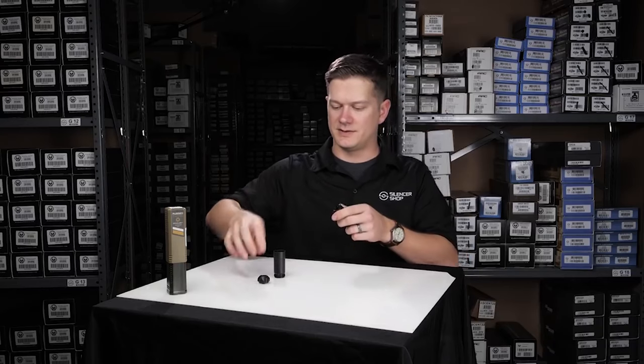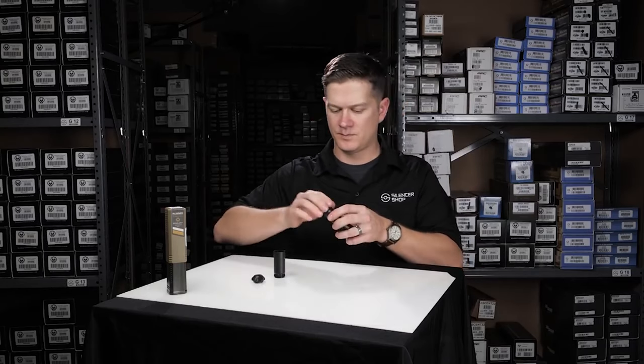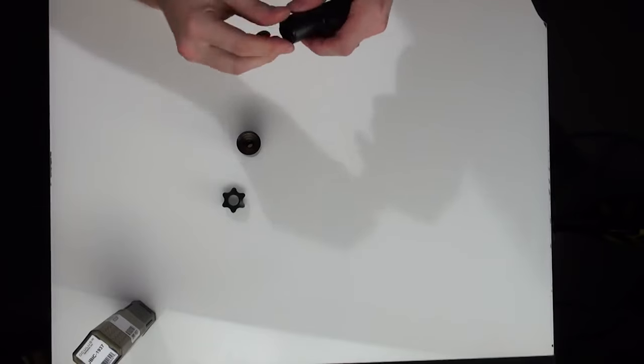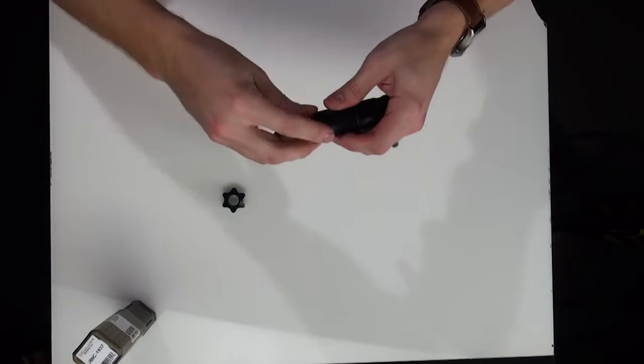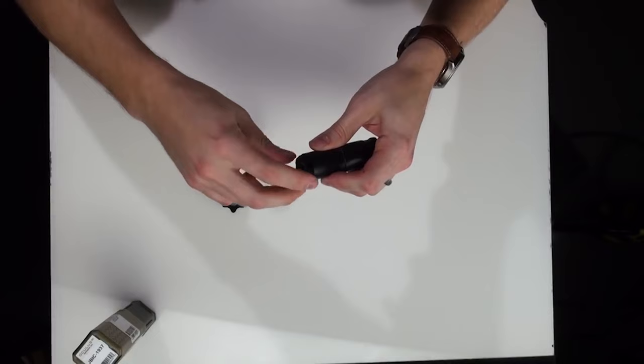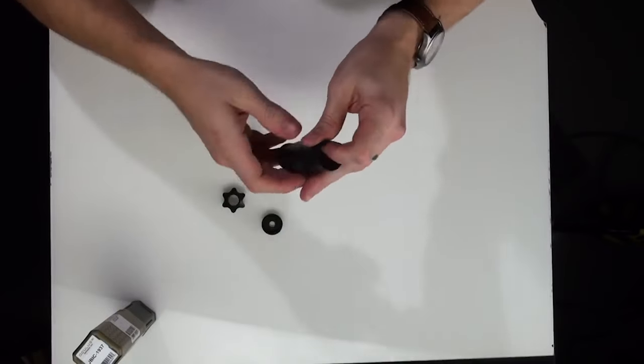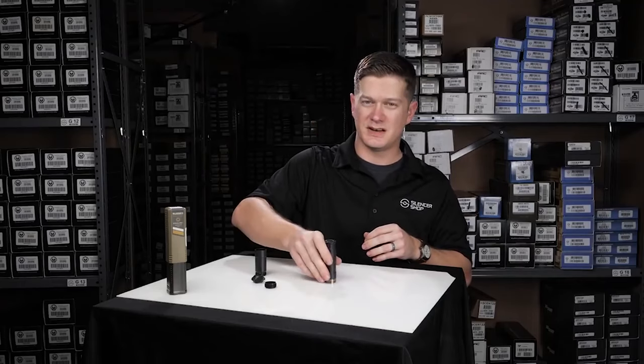To disassemble the silencer, same process: remove the end cap, and your baffles should slide right out.